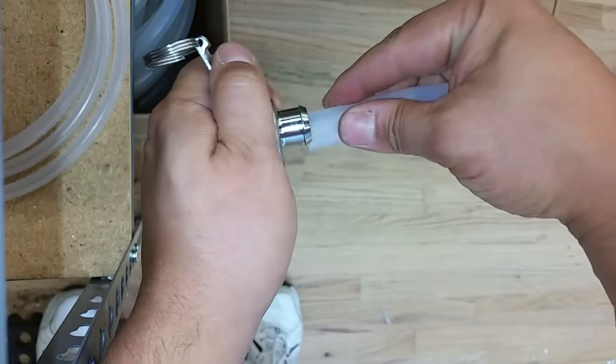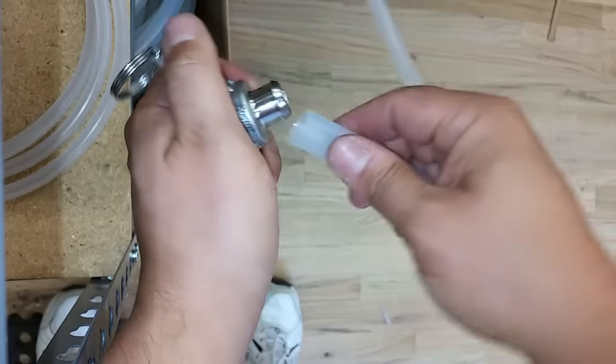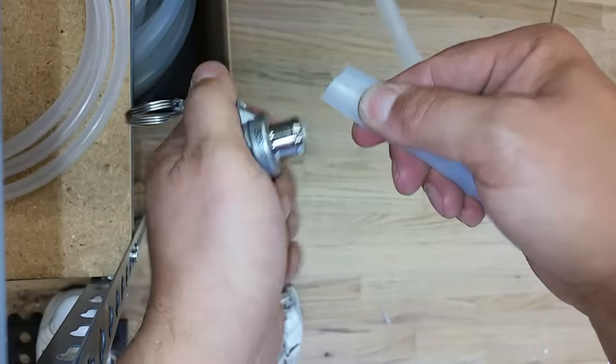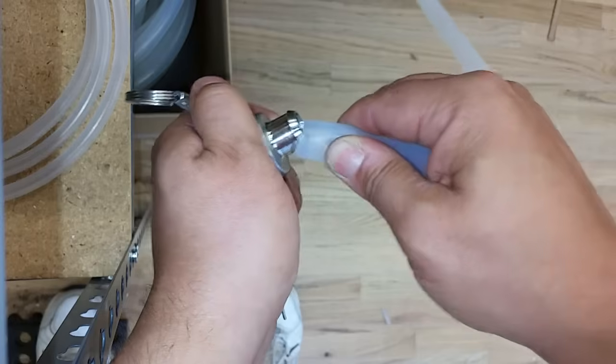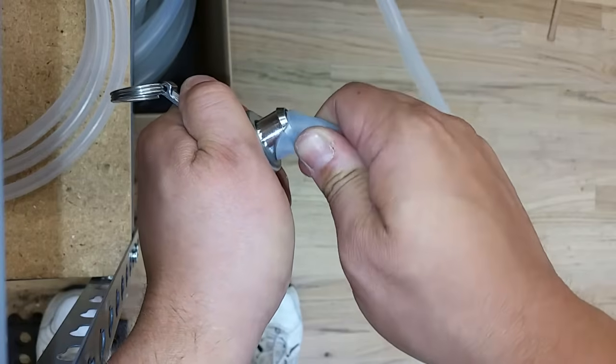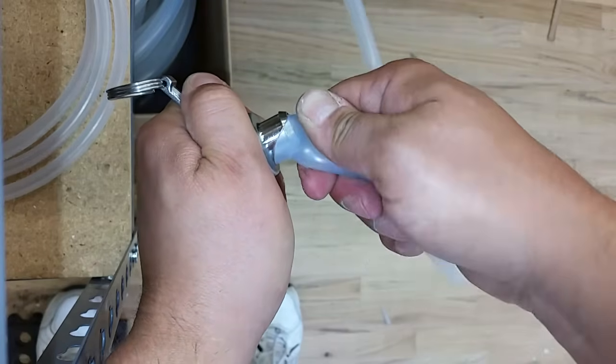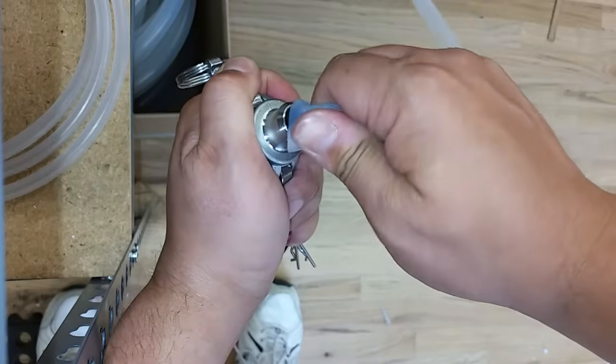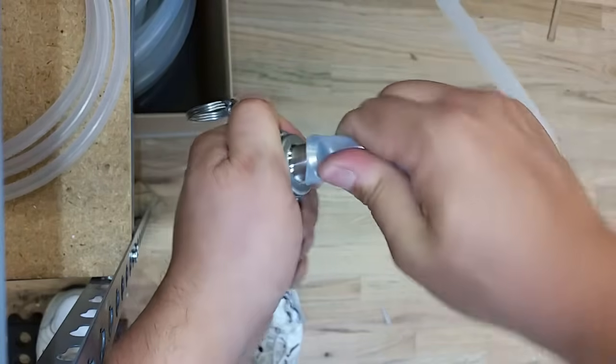Rather than trying to force it on straight, you pinch it right here with about a half inch of tubing sticking out of your fingers, push this on at an angle, and then rotate the tubing. You can see what's happening when I rotate it—it forces it over more and more.